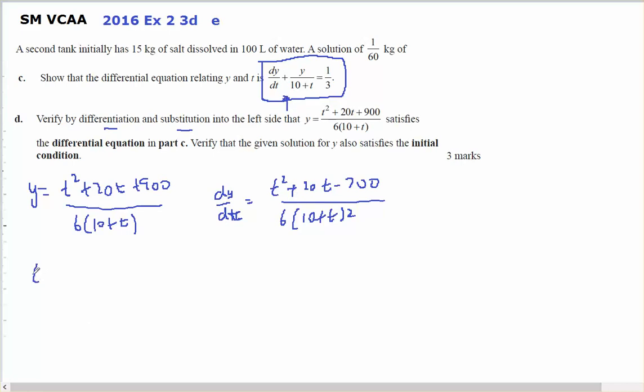So, t squared plus 20t minus 700 all over 6(10 plus t) squared, plus y which is t squared plus 20t plus 900 all over 6(10 plus t), divided by (10 plus t). So I've got another (10 plus t). This is my left hand side.